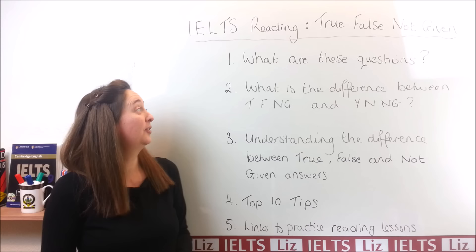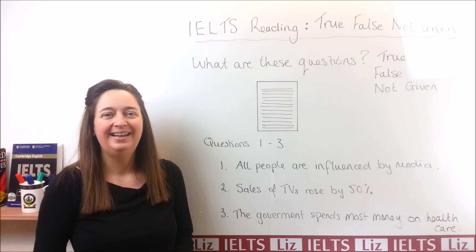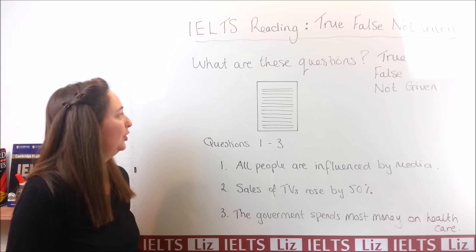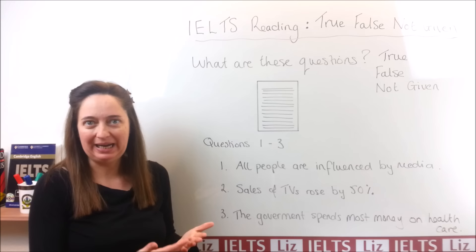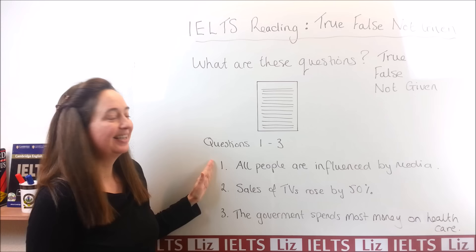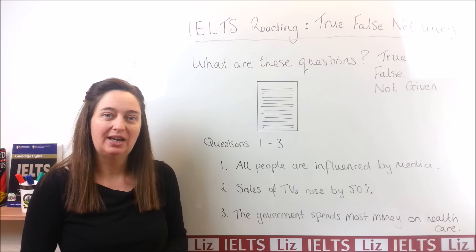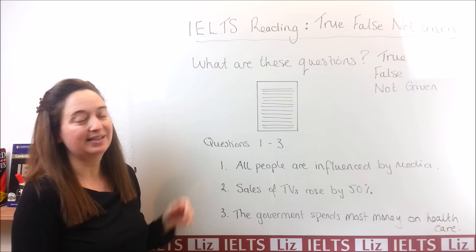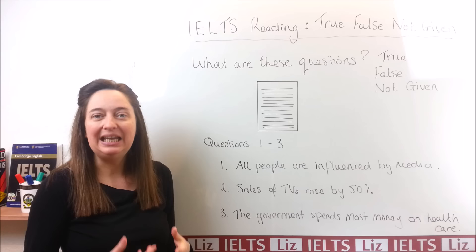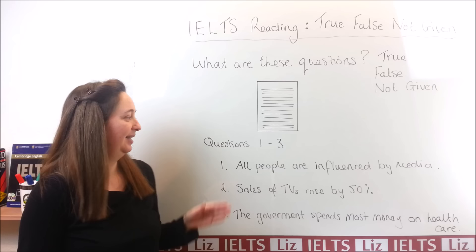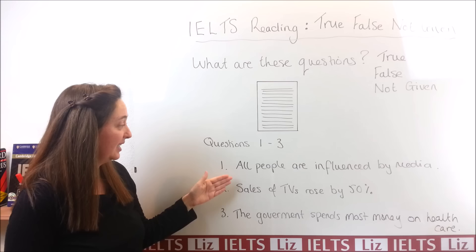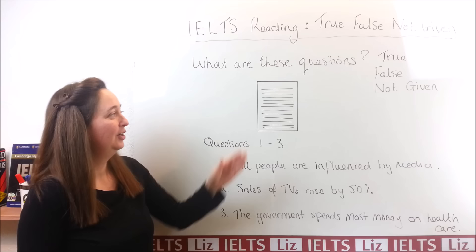So let's start with the first question. What do we have to do for these types of questions? Here is an example of true, false, not given questions. This would be your reading passage — the article that you need to read — and there will be questions. Each question is a statement. For example, 'all people are influenced by media.' You need to look at that statement, read through the passage, and decide if this information is in the passage. If you can find the information in the passage, then the answer is true. If the information in the passage is opposite to the statement, then it's false. And if the information cannot be found — you've read through your passage and you cannot find this information — your answer is not given.